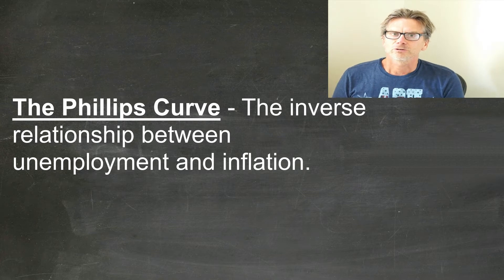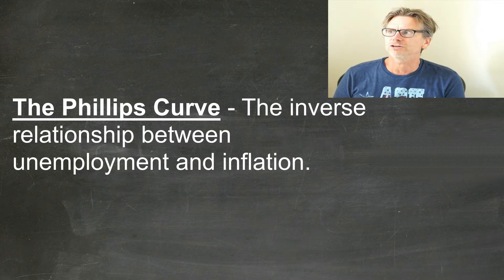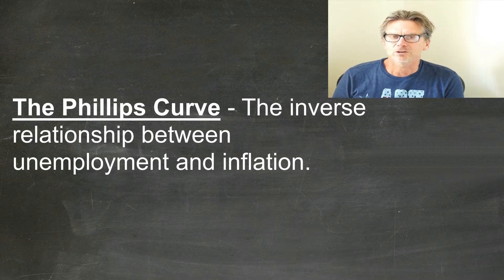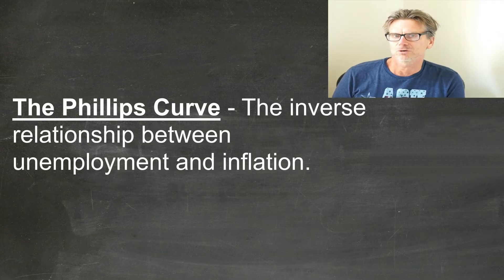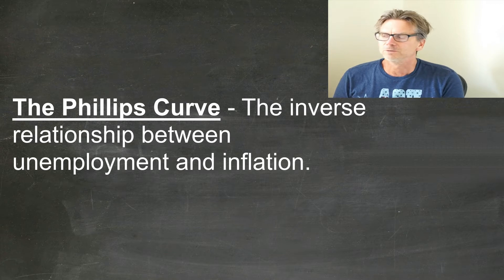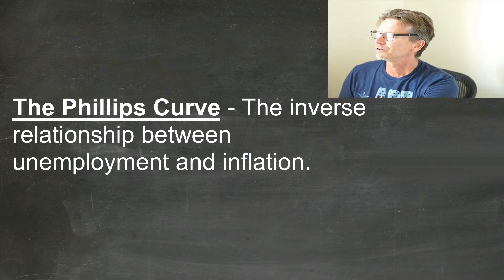The Phillips curve is defined as the inverse relationship between unemployment and inflation. When inflation is high, unemployment is low. When unemployment is high, inflation is low. It's an economic concept — it doesn't always hold. That's the definition of the Phillips curve.